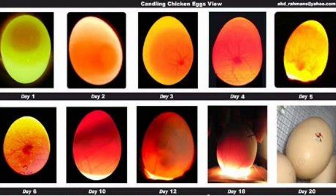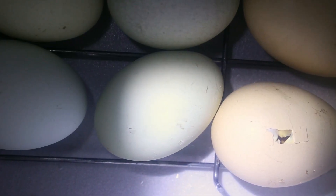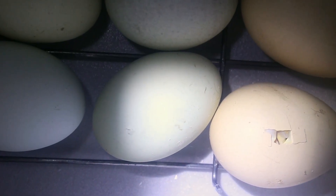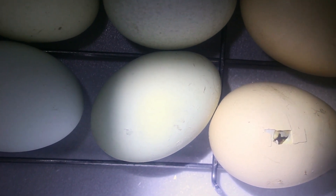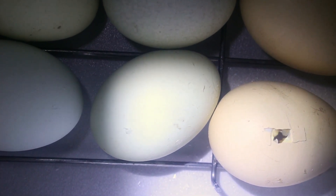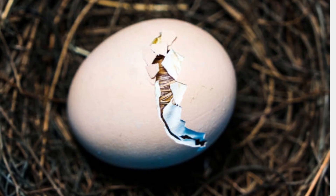On day 20, the egg may pip, meaning a tiny crack appears in the center of the egg. The chick then uses its egg tooth to unzip the egg, cracking a line around the circumference of the egg.